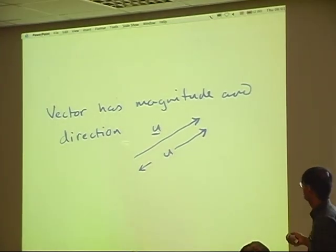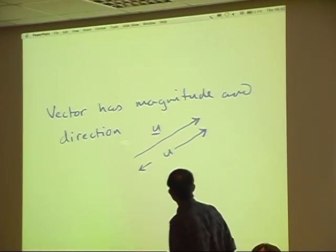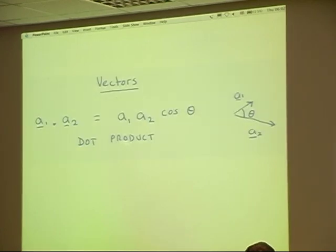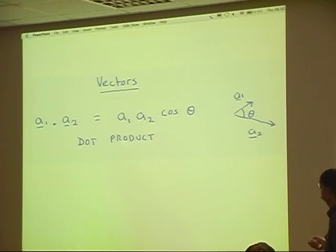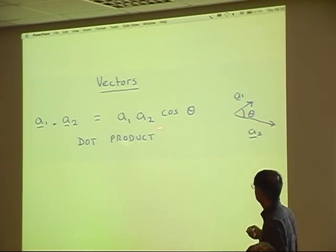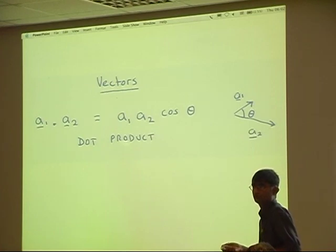A vector is a quantity which has a magnitude and a direction — it's a physical quantity whose magnitude doesn't vary with your choice of coordinate system. If I take a dot product between two vectors, that is the same as the magnitude of A1 times the magnitude of A2 multiplied by the cosine of the angle between those two vectors. This is no longer a vector — it's a scalar quantity, sometimes known as a scalar product.